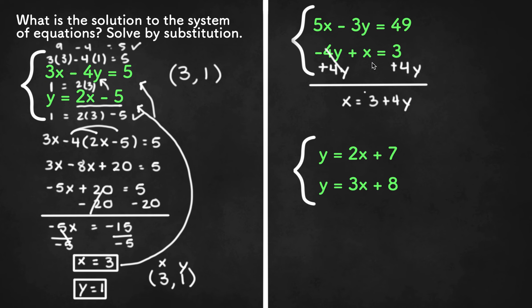And if we get an example like this where the same variable is isolated in both equations, what we can do is we can plug in 3x plus 8 into this y right over here, or we can plug in 2x plus 7 into this y right over here. Either way works fine. So we can get something like 3x plus 8 equals 2x plus 7 or vice versa. And then we can solve just like we did here for x and then plug the x back into one of the equations to solve for y and then check our work.